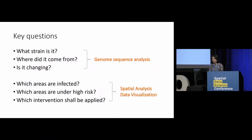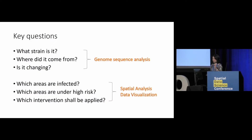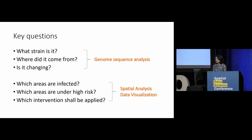The key questions we ask during the research can be divided into two parts. We care about infectious disease — that's all about bacteria and virus — so there is a heavy focus on genome sequence analysis: what strain is it, where did the strain come from, and is there anything suspiciously changing? We also care a lot about the spatial elements, because we want to know which areas get infected more, which areas are under high risk, and whether there are targeted interventions we can apply to these regions.